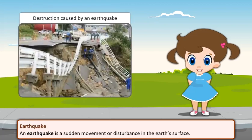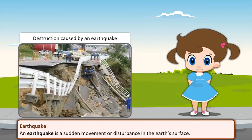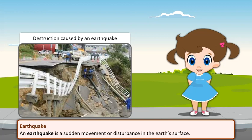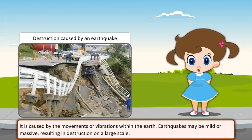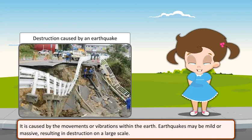An earthquake is a sudden movement or disturbance in the earth's surface. It is caused by the movements or vibrations within the earth. Earthquakes may be mild or massive, resulting in destruction on a large scale.